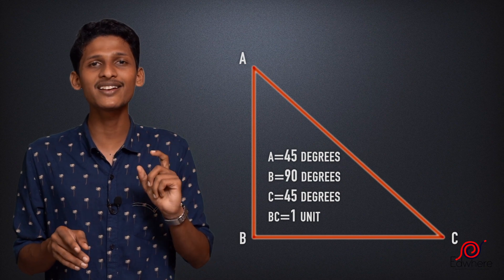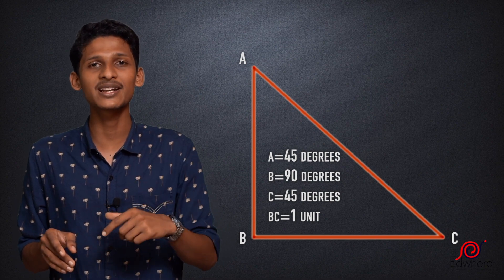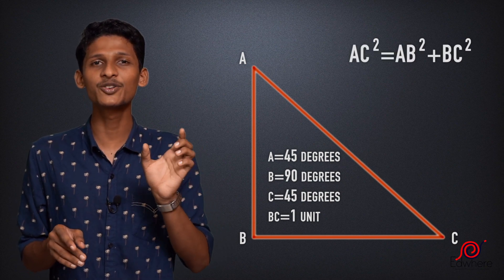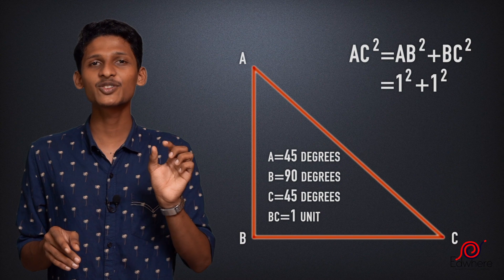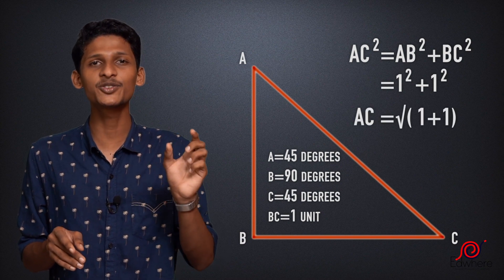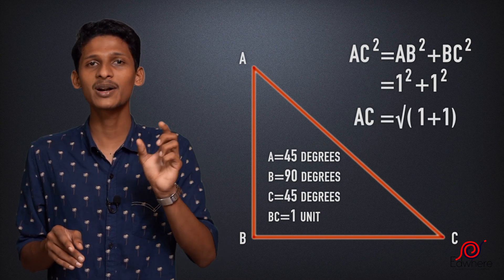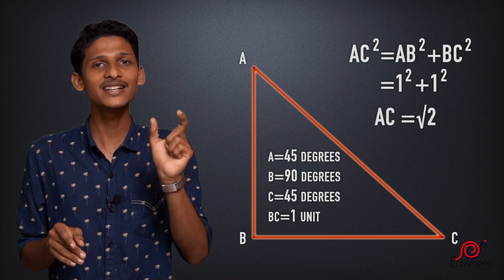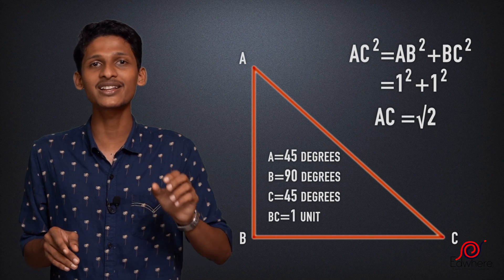Now we have to find AC. AC square equals 1 square plus 1 square. AC equals the square root of 1 plus 1, that is root 2. So AC is root 2.